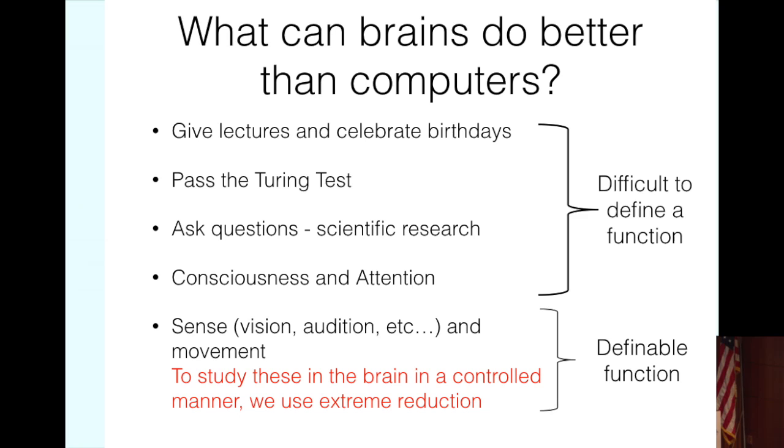What I think is good, something we can study quite well in neuroscience, and still the brains do better than computers, are how the brain senses and how it controls movement. For instance, how we see, how we hear. And we can define some functions for these. We don't really study how the brain sees or hears. We have to reduce these problems in order to study them in a controlled manner. So we study how the brain responds to specific components of vision or of other senses. The big picture, the way I see it, we're very far from understanding how the brain does these things.